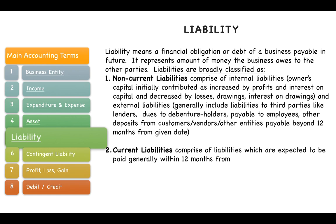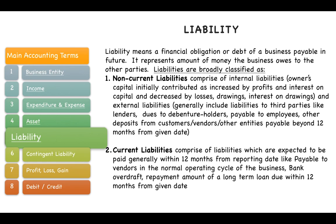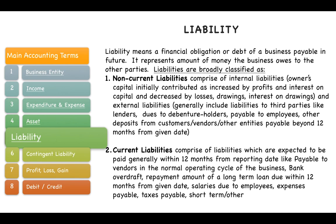Current liabilities are those expected to be paid generally within 12 months from the reporting date, such as payables to vendors in the normal operating cycle, bank overdraft, the repayment installment of a long-term loan due within 12 months, salaries due to employees, expenses payable, taxes payable, and short-term loans or deposits payable within 12 months from the balance sheet date.